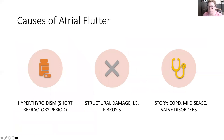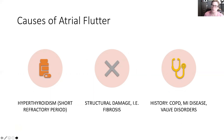The causes of atrial flutter should be no surprise because they're the same as the causes for atrial fibrillation. We've got hyperthyroidism — that shortened refractory period is really a key feature here — structural damage, coronary artery disease, decreased blood flow, fibrotic tissue, decreased elasticity, history of COPD. So oxygenation issues, a past MI with injured or irritable tissue all apply.